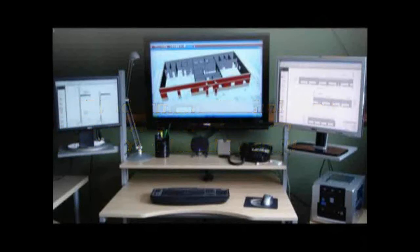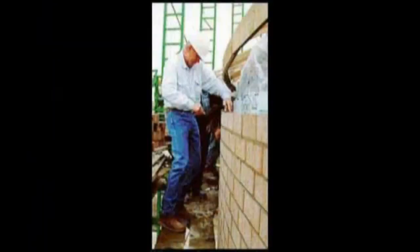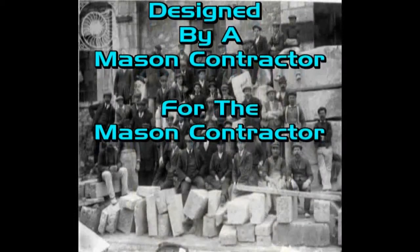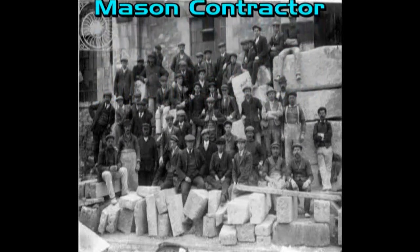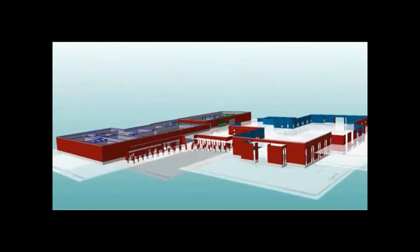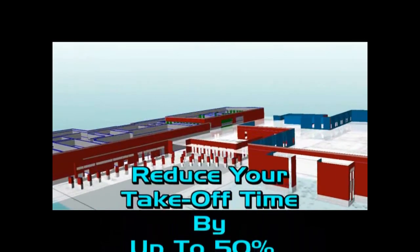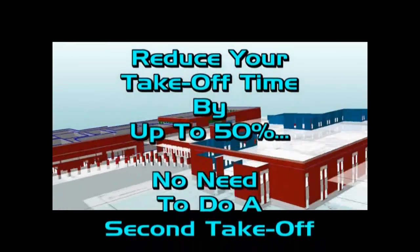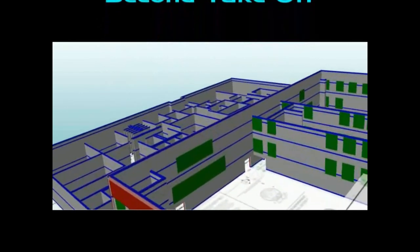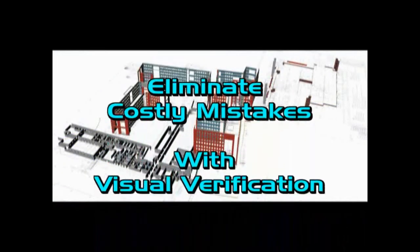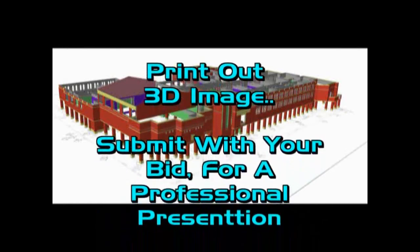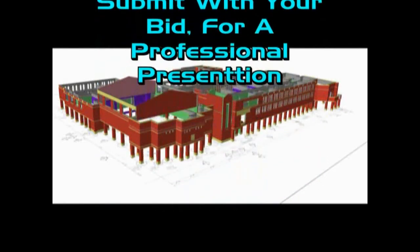Tradesman is there when you need them. Why should you choose Tradesman's Master Estimator? Tradesman's Master Estimator was designed by a mason contractor for the mason contractor. It has the detail a mason contractor needs and no other masonry estimating software can provide. You will have detailed figures on materials and labor so you will know your exact cost. Tradesman's Master Estimator can reduce your estimating time by up to 50%. There is no need to do a second takeoff after you have won the bid. You will have your bottom line bid price and your material quantities with your first takeoff. You can feel confident that you have eliminated any costly mistakes from your takeoff with visual verification. Print out your 3D takeoff and enhance your professional presentation when your bid is submitted. You will get noticed.